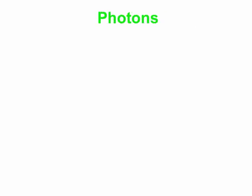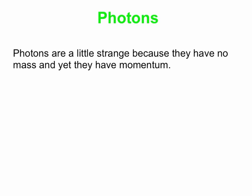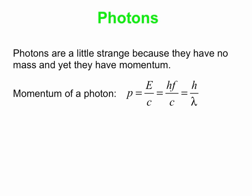Going on with photons a little bit more, they're a little bit strange because they don't have any mass, and yet they do carry momentum. The momentum of a photon is given by this equation: P is energy over the speed of light. Energy can be written as HF, and HF over C — well, F over C is 1 over the wavelength — so you can write that as P equals H over lambda, where P is the momentum and H is Planck's constant.